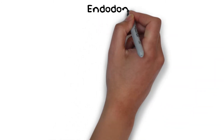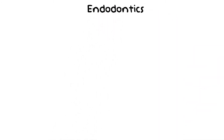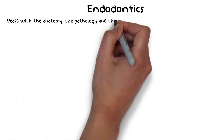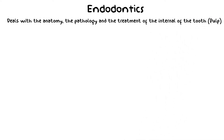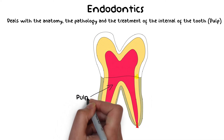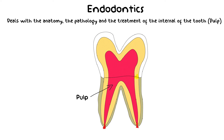In simple words, endodontics is simply the science of the internal anatomy of the tooth. It deals with the anatomy, the pathology, and the treatment that concerns the internals of the tooth — that is the pulp of the tooth. For a general dentist or a dental student, basic knowledge about this internal anatomy is very important in order to identify the pathology concerning the pulp and then devise a proper treatment plan. So today we will start by discussing the basic internal anatomy of the tooth.